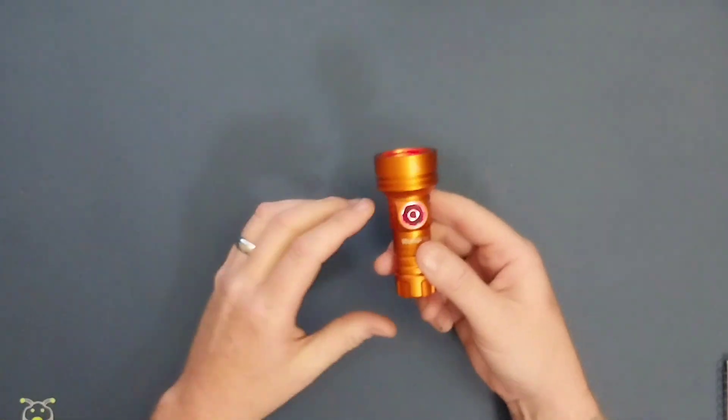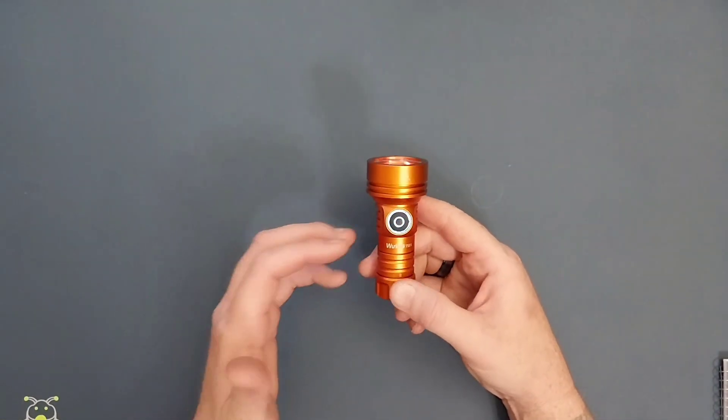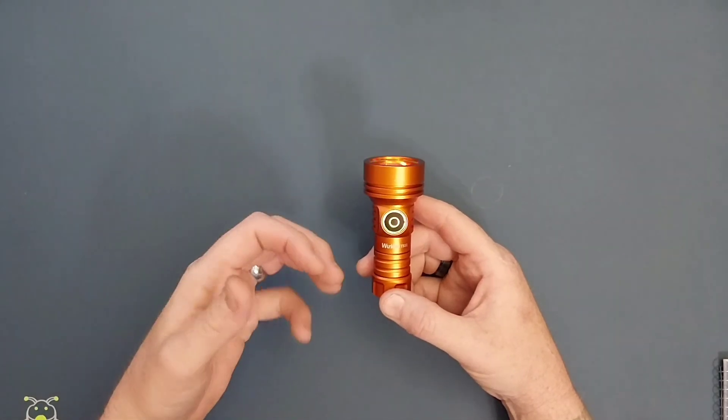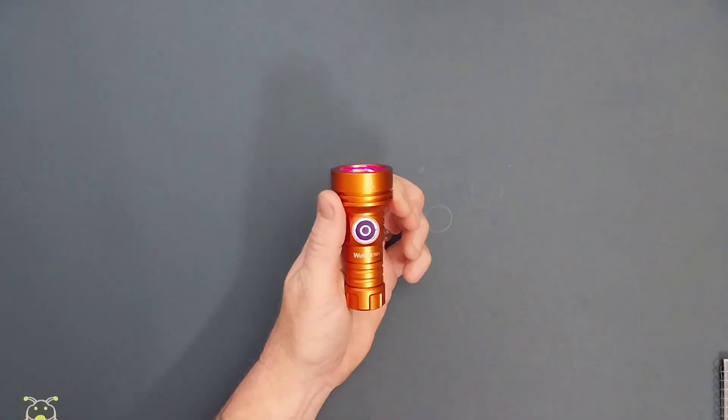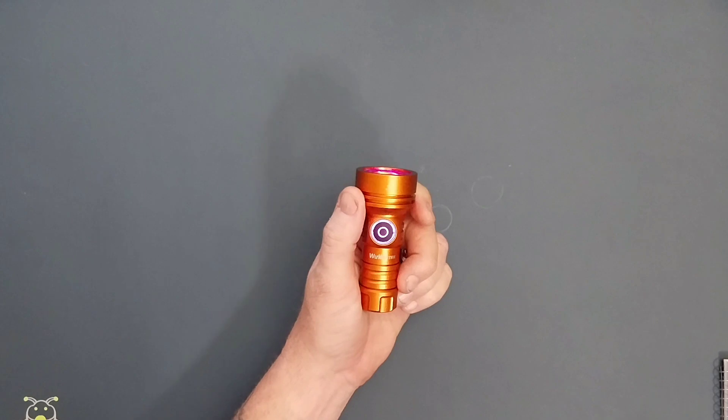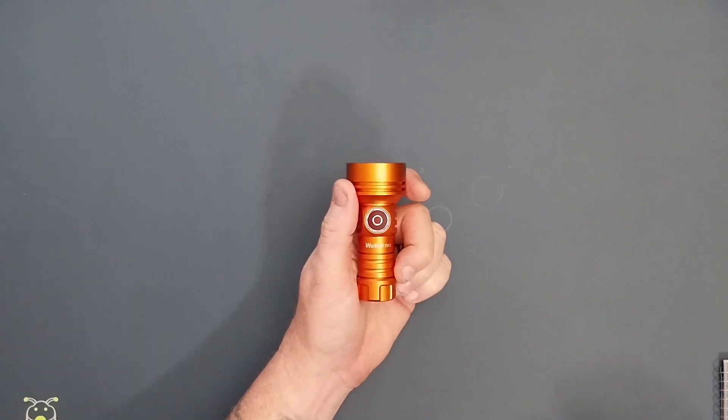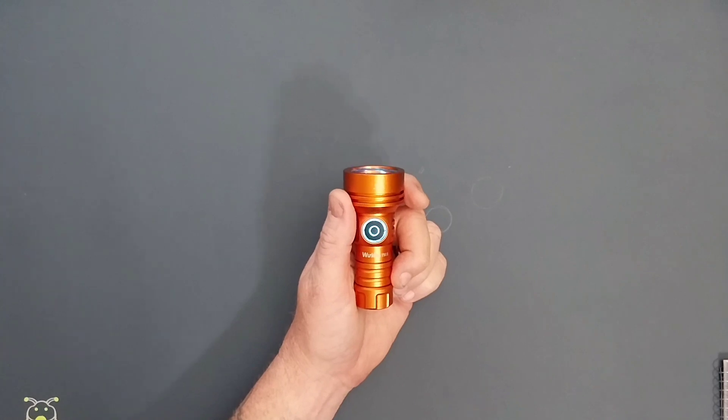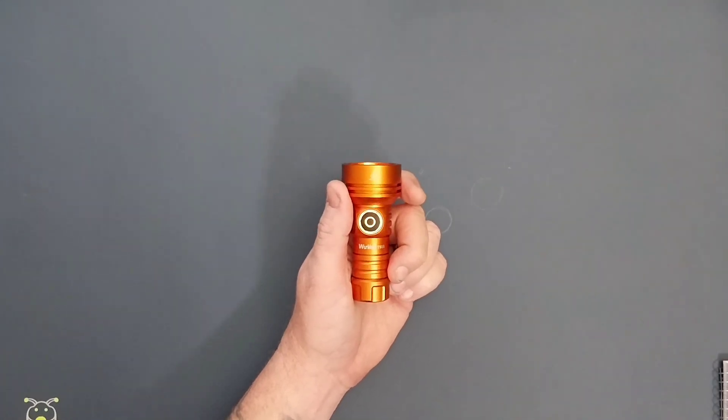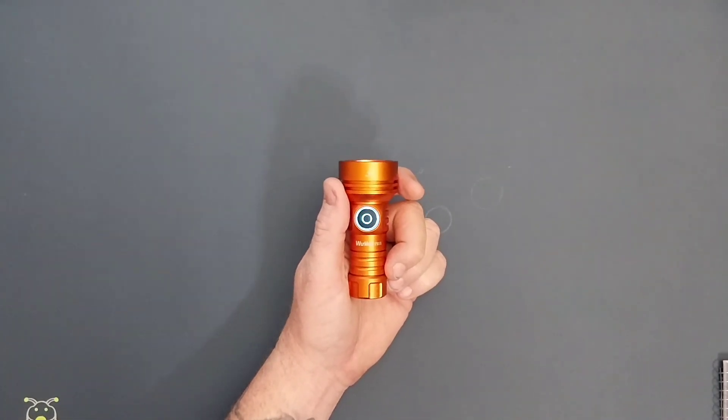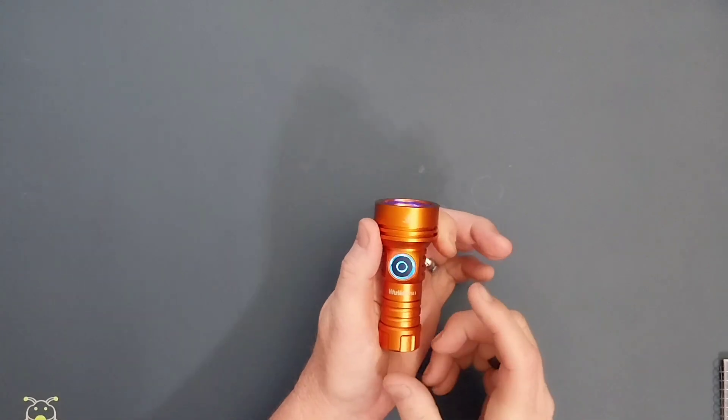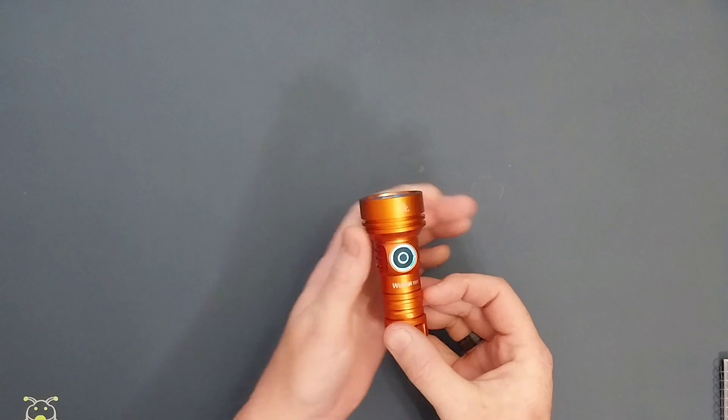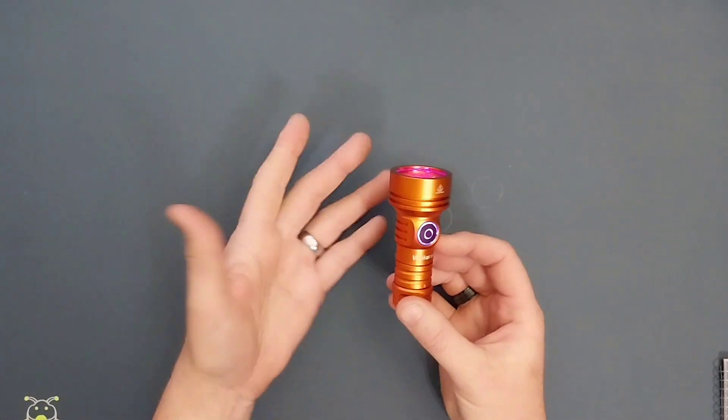You can buy one specifically for this in the orange color. It also comes in black. But you can actually put a Wurkkos FC11, FC12, I believe an HD15, HD15R, and the FC13. But actually I put on my Sofirn SC31 Pro 18650 battery tube on this one and it worked, so that's actually pretty cool.